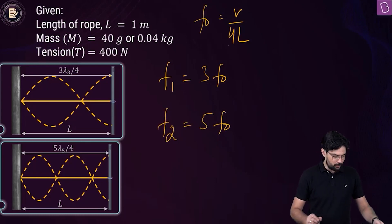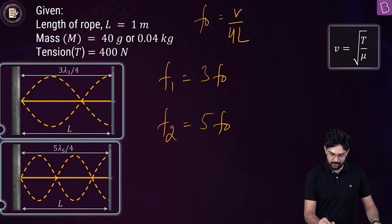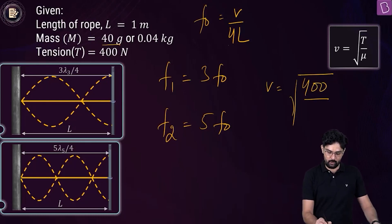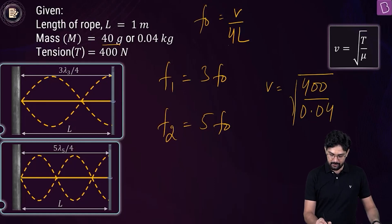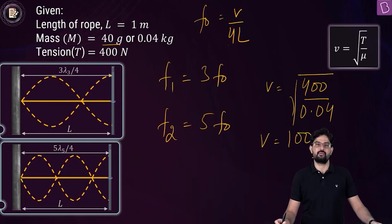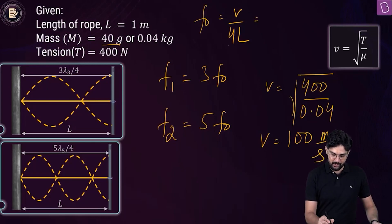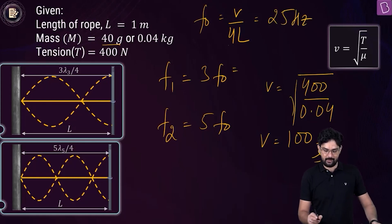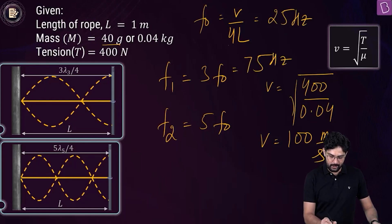Let's first find the wave speed V. V = √(T/μ) = √(400 / (0.04/1)) = 100 m/s. The fundamental frequency is 100/(4×1) = 25 Hz. The first overtone has frequency 75 Hz and the second overtone has frequency 125 Hz.